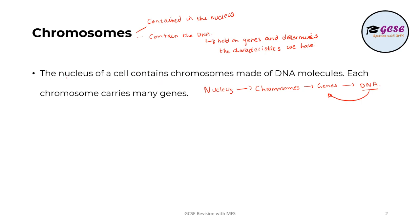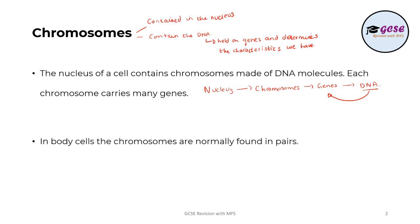Chromosomes are held within the nucleus of the cell and contain DNA, which is held in genes and determines the characteristics we have. A normal human body cell has 46 chromosomes. In body cells the chromosomes are found in pairs, so we have 23 pairs of chromosomes in total.